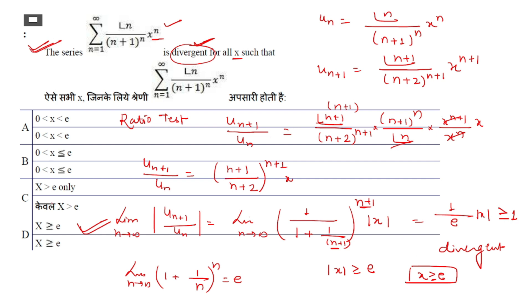The correct option is D: for x ≥ e, this series will be divergent.